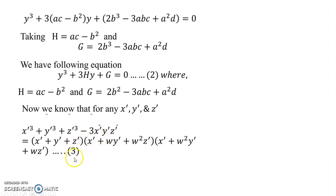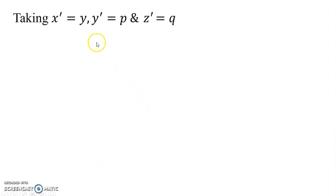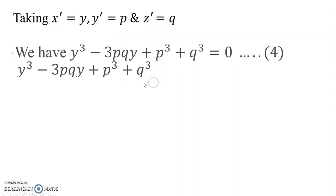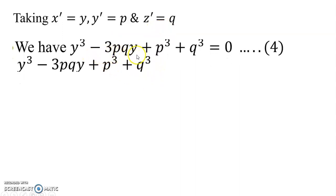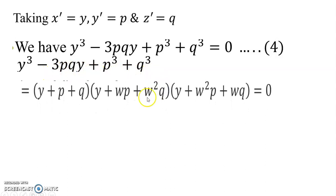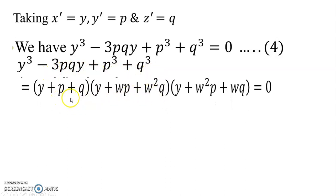Let ω be a cube root of unity. Setting x' = p and z' = q, we write y³ - 3pq·y - (p³ + q³) = 0. This factors as (y + p + q)(y + ωp + ω²q)(y + ω²p + ωq) = 0.